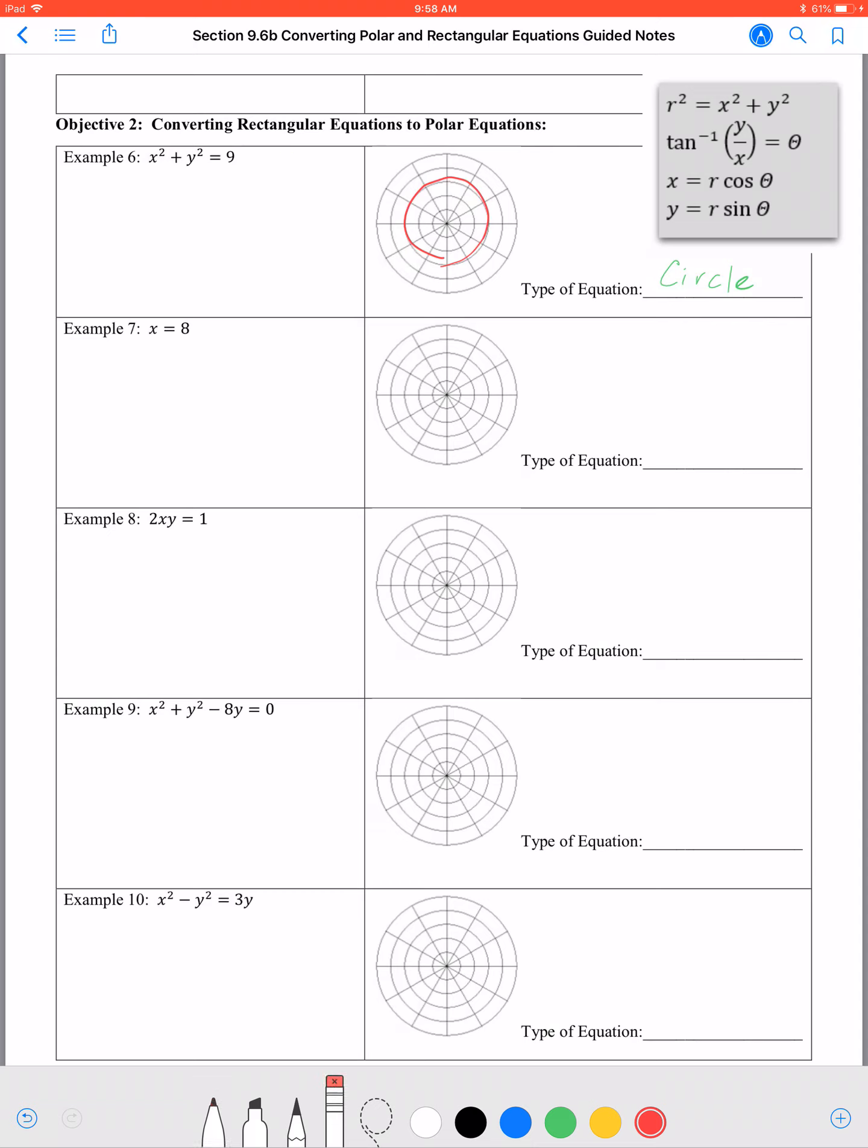But if not, remember we've got these key formulas. I've got r squared equals x squared plus y squared. x squared plus y squared is there.